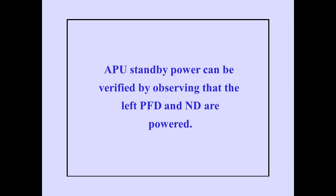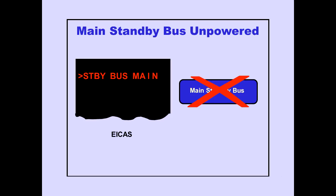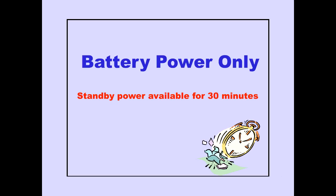APU standby power can be verified by observing that the left PFD and ND are powered. The main battery powers the main standby bus through the main standby inverter if all other normal sources are unpowered. With battery power only, standby power is available for at least 30 minutes.